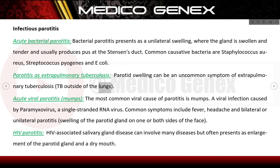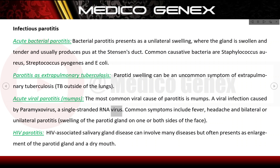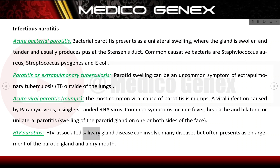Parotid swelling can be an uncommon symptom of extra-pulmonary tuberculosis — TB outside of the lungs. Acute viral parotitis: the most common viral cause of parotitis is mumps, a viral infection caused by paramyxovirus, a single-stranded RNA virus. Common symptoms include fever, headache, and bilateral or unilateral swelling of the parotid gland.